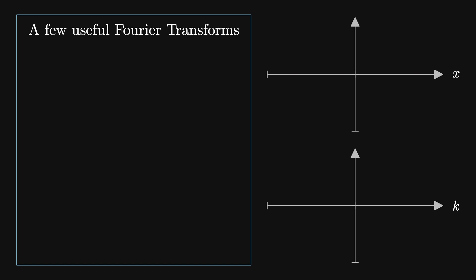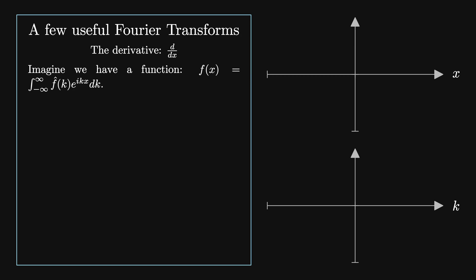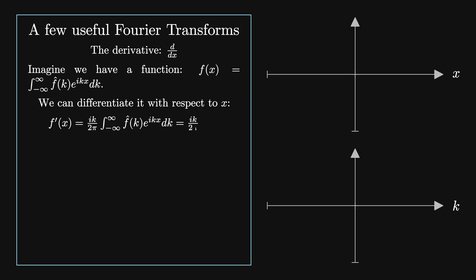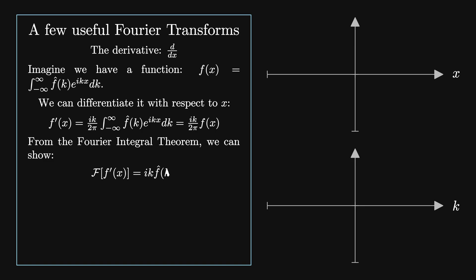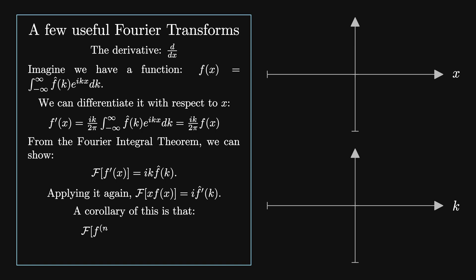Beyond being able to reconstruct any real space function from the frequency and phase information, the real power of Fourier transforms lies in using them to solve boundary value problems. Let's look at Fourier transforms of derivatives. If f of x equals 1 over 2 pi times the integral from minus infinity to infinity of f-hat of k e to the i k x dk, we can differentiate with respect to x to find f-prime of x equals i k times f-hat of k over 2 pi. From the Fourier integral theorem, the Fourier transform of f-prime of x is i k times f-hat of k. Applying it again, a corollary is that the Fourier transform of the nth derivative of f equals (i k)^n times f-hat of k.